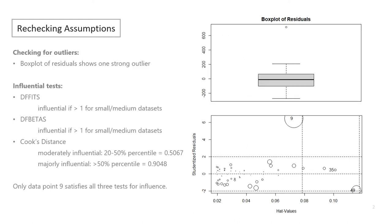We know from the box plot that data point 9 is an outlier, but we need to test if it is also influential. The influence plot below shows data point 9 is very large, indicating it likely is influential. There are several values we can use to test this: DFITs, DFBetas, and Cooks Distance. Because this data set is small or medium-sized, we look for any points that have a DFITs or DFBetas value of over 1. For Cooks Distance, anything between the 20th and 50th percentile is considered moderately influential, and anything over the 50th percentile is considered majorly influential. For all three tests, only data point 9 is above these critical values. Data point 9 has a DFITs value of 1.8113, DFBetas all predictors are above 1, and Cooks Distance of 0.8947, which falls in the high end of the moderately influential range.